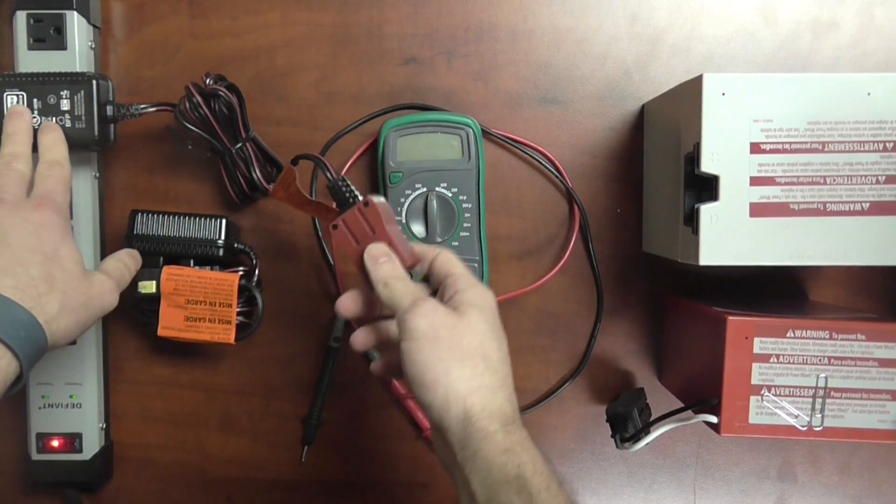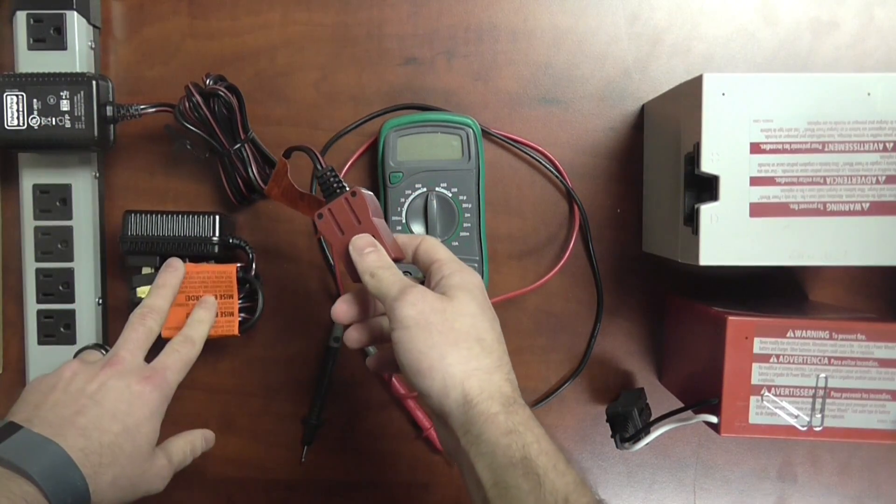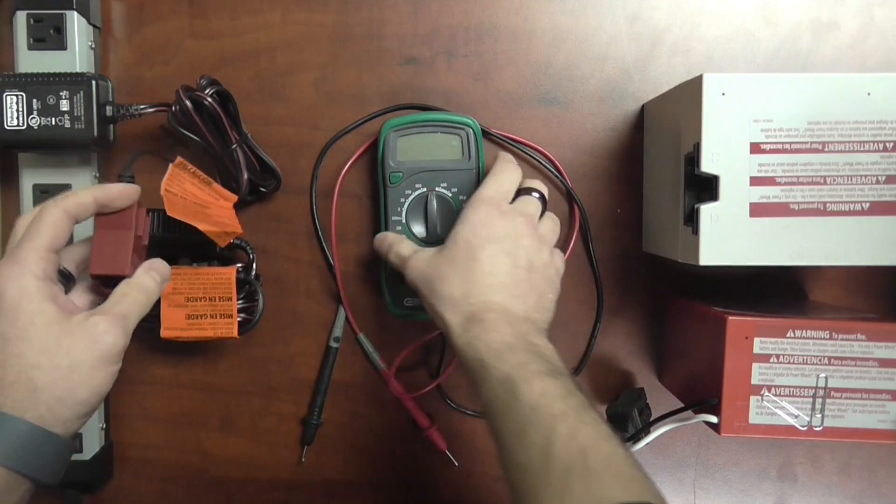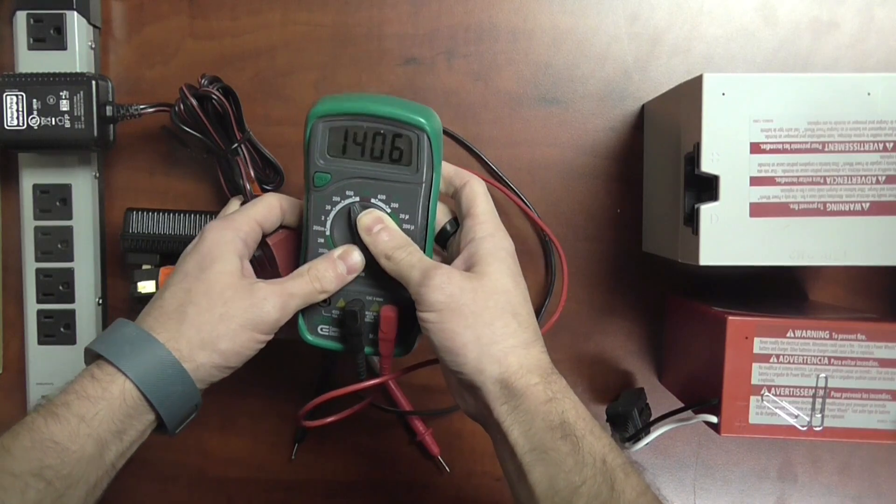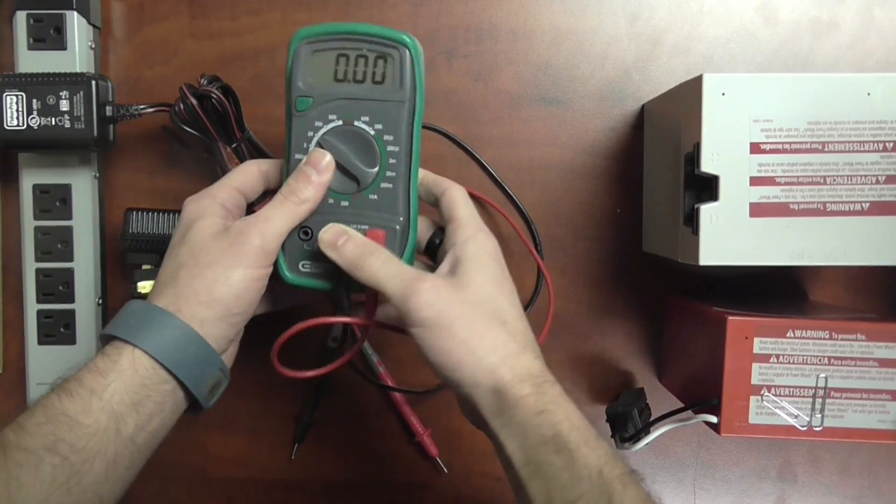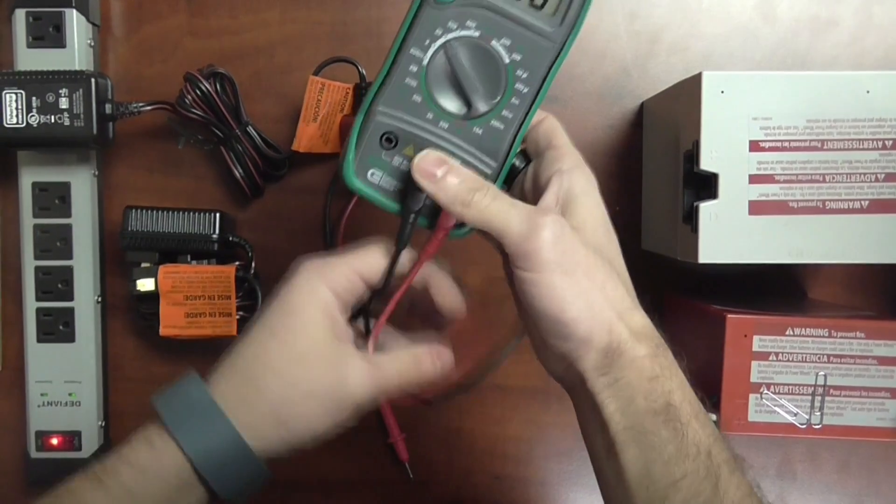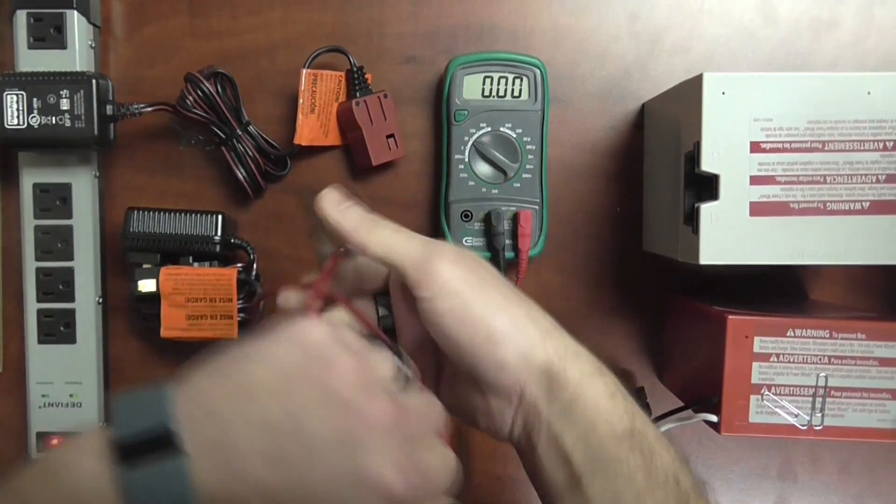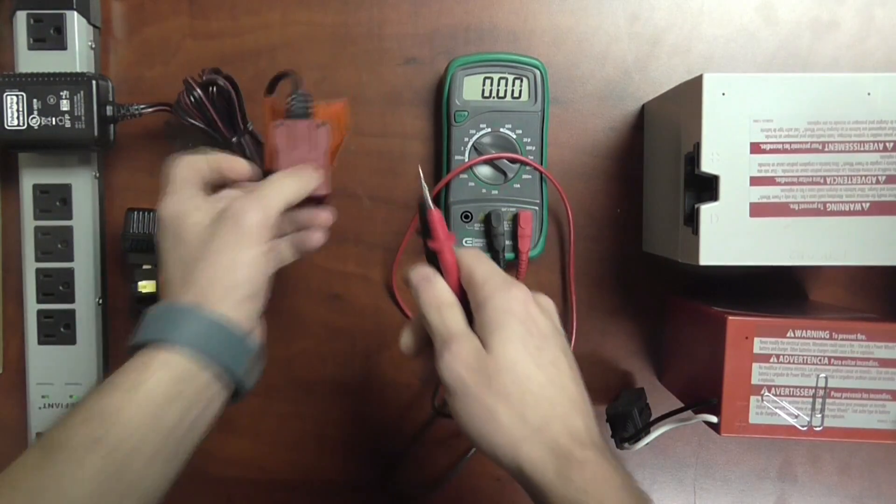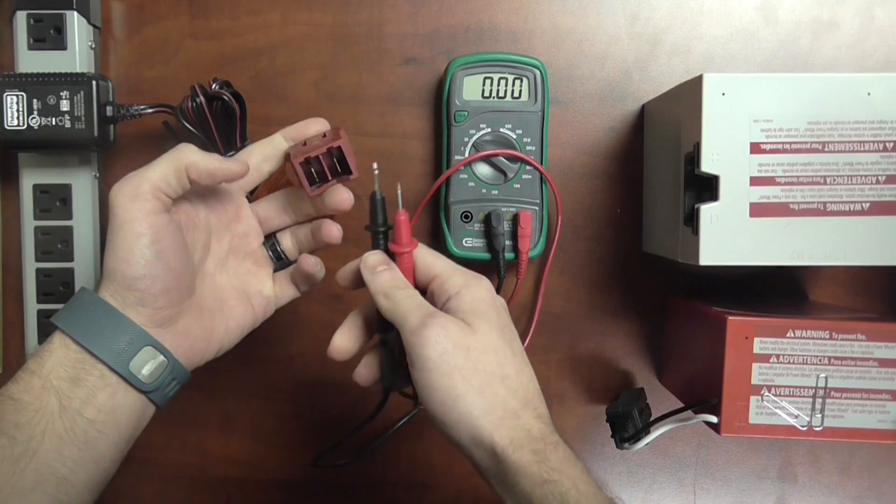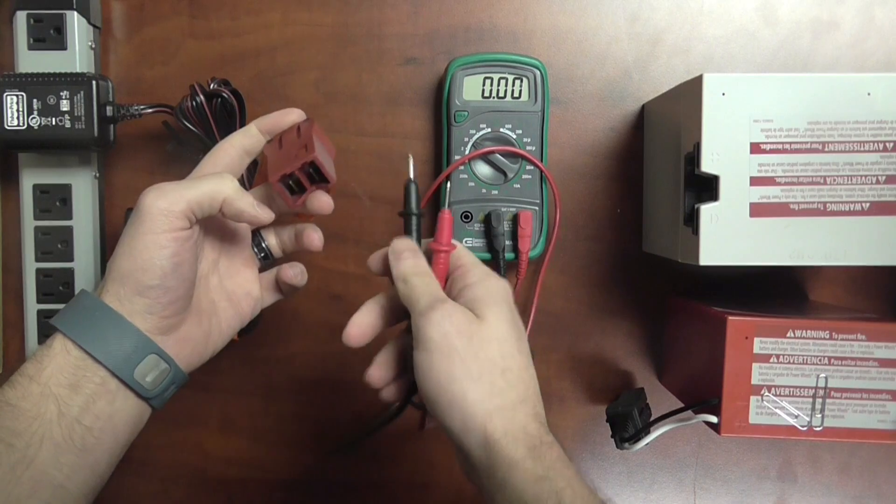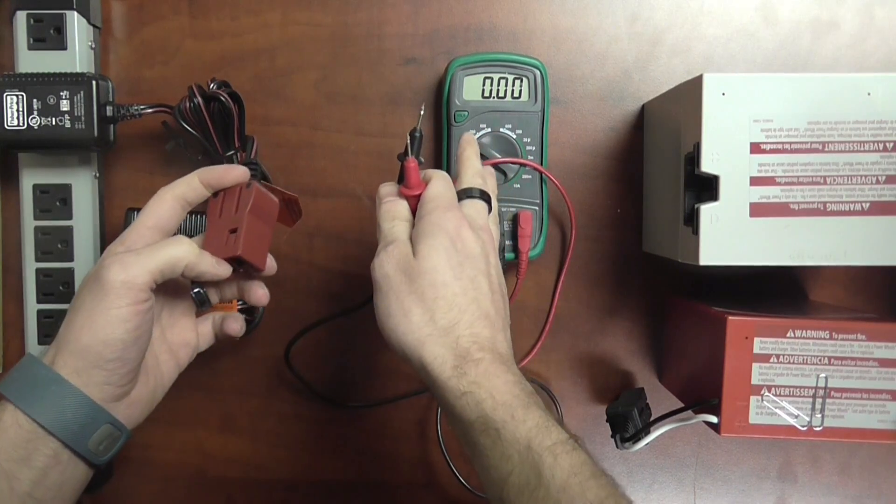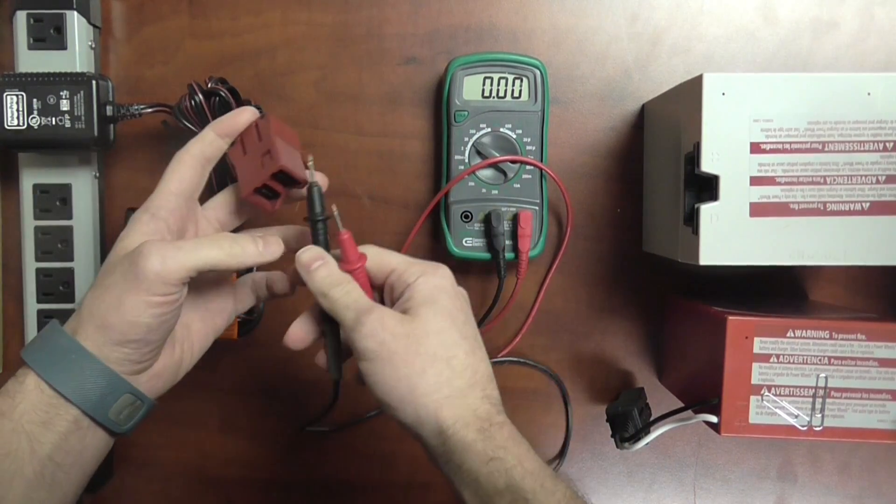The first one we're going to be testing is a 6 volt charger. I also have a 12 here. So you're going to take your voltmeter and switch it over to the 20 DC side. And then basically you're going to take your electrodes here and touch them right to the terminals of the charger. Now in this case it doesn't really matter which one's positive or negative. If you flip them by accident it's just going to give you a negative reading which is still going to work for us.